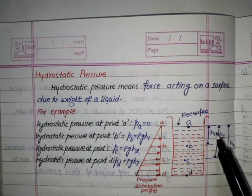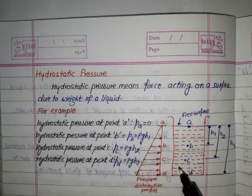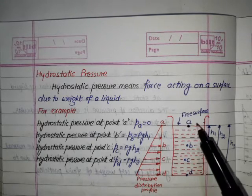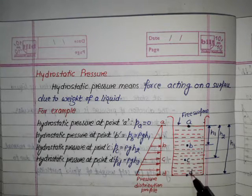We have a container filled with water and we consider four points: point A at the free surface of the liquid, point B, and points C and D.